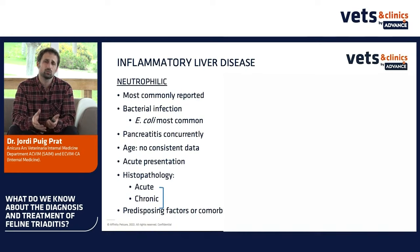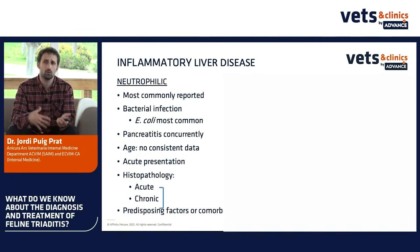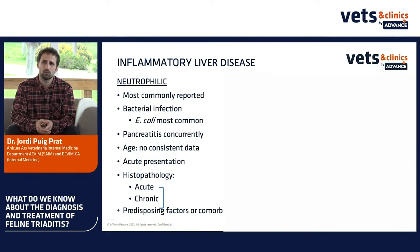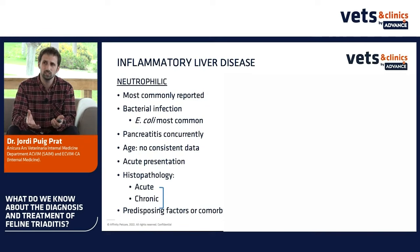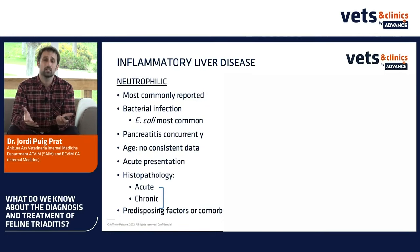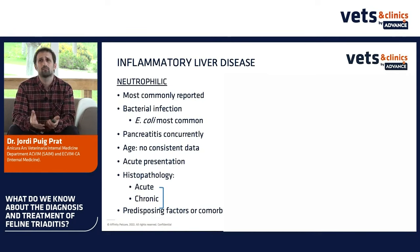This neutrophilic form sometimes has predisposing factors or comorbidities like cholelithiasis, choledochal plate malformation, or extrahepatic bile duct obstruction. Those conditions happen alongside neutrophilic inflammation of the liver.